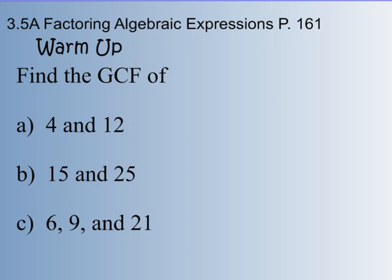In today's lesson, which is 3.5a in the book on page 161, we're going to be basically doing the opposite of what we've done in the last two lessons. We're going to be dividing. We're going to be finding a greatest common factor. We're not going to multiply over parentheses. We're going to work backwards and create parentheses, and through division we're going to factor. A little warm-up that would help us is to think about greatest common factor.